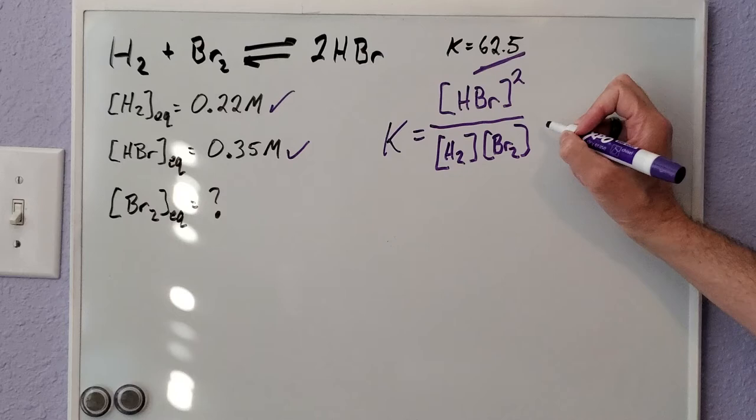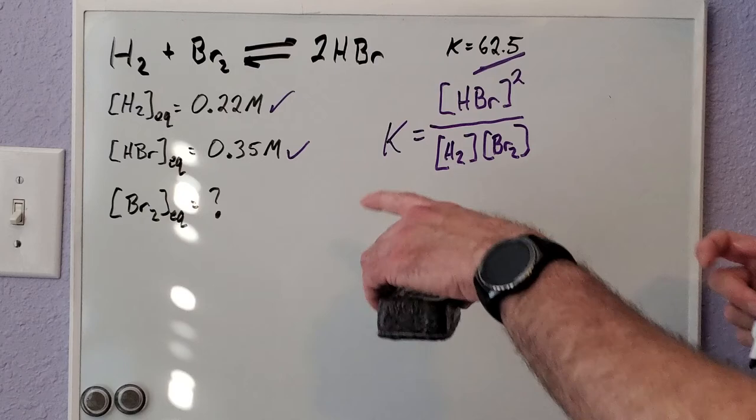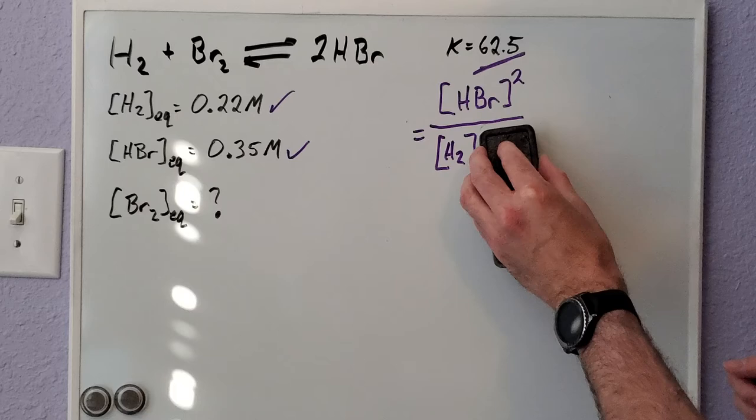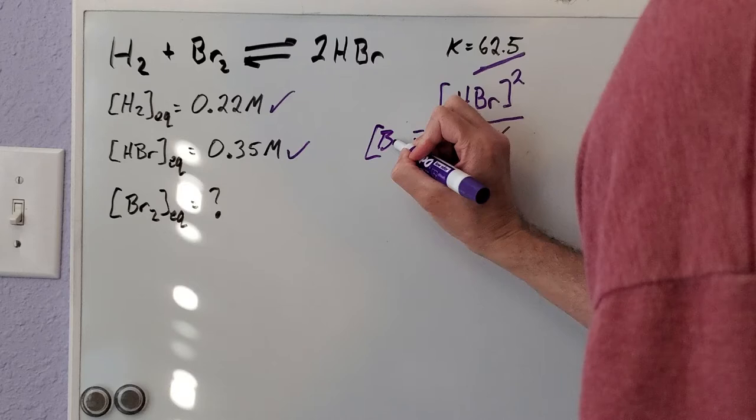If we're solving for Br2, I'm going to multiply Br2 to this side and divide both sides by K, so these two will swap places. You'll have [HBr]² over [H2] times K equals [Br2]. The setup is not too horrible.